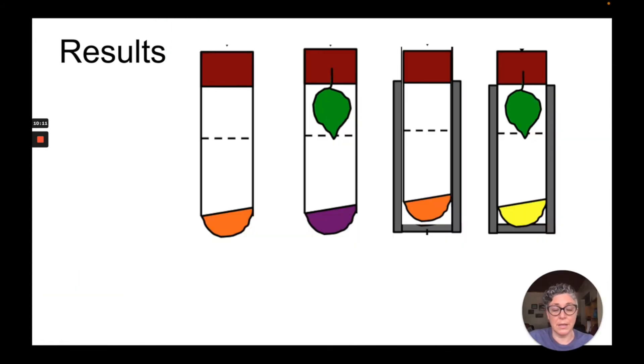What do these results tell us? Well first of all we see that the tubes that did not have plants in them did not have any change to the indicator. That's expected. Obviously no gas exchange is taking place there.